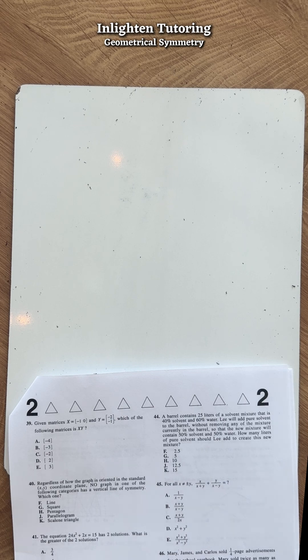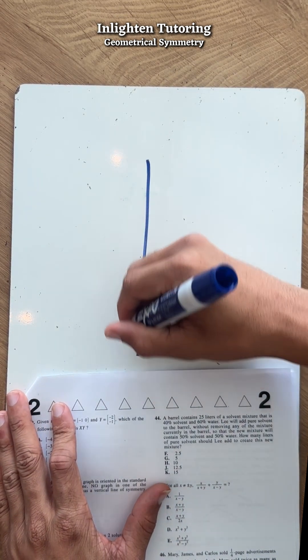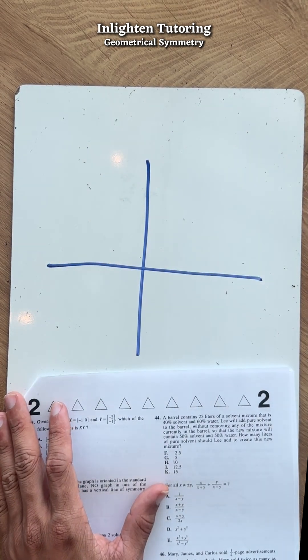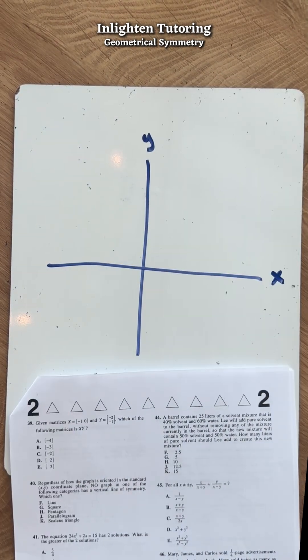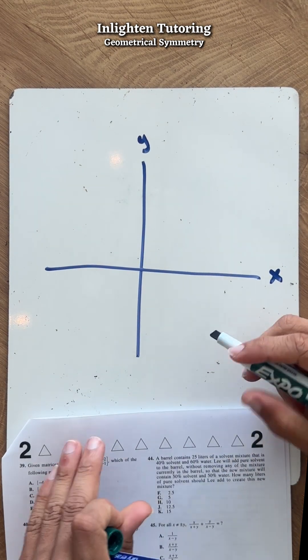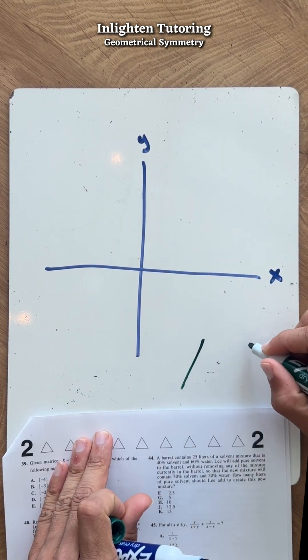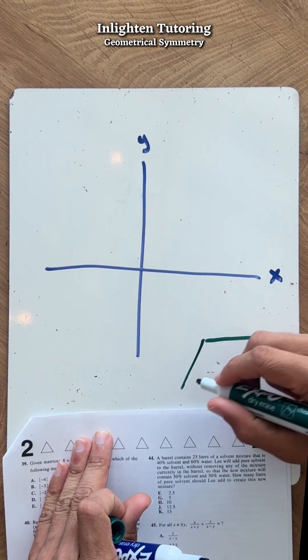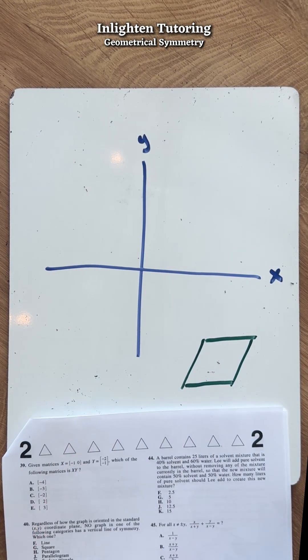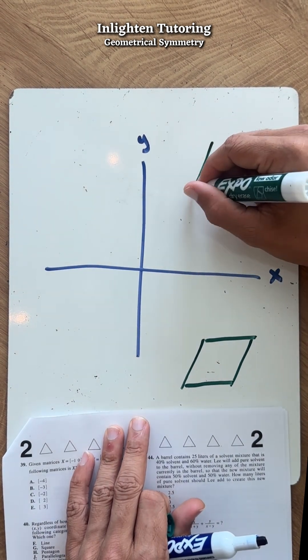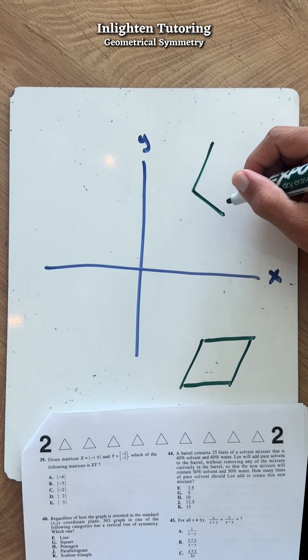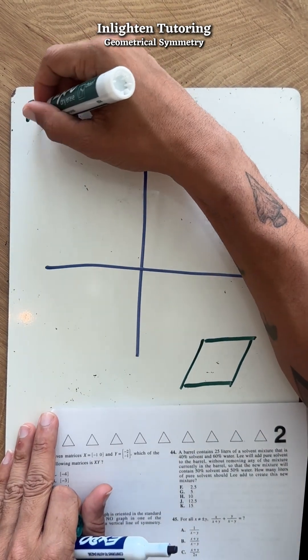The options are square, pentagon, and parallelogram. A parallelogram looks like this. And finally, a scalene triangle. So we have five different options: F. Line, G. Square, H. Pentagon, J. Parallelogram, and K. Scalene Triangle.